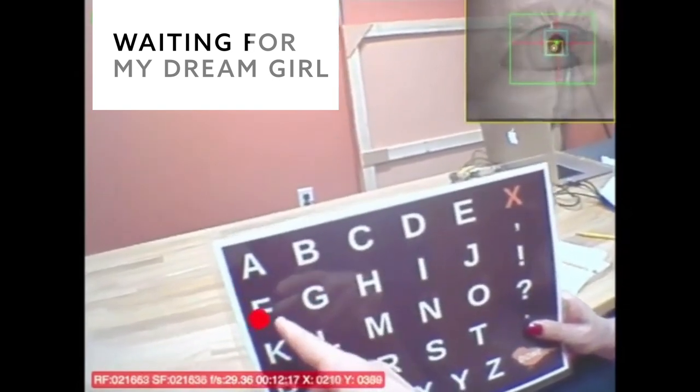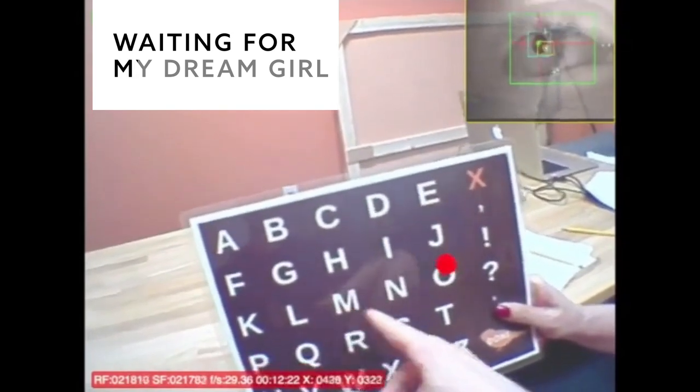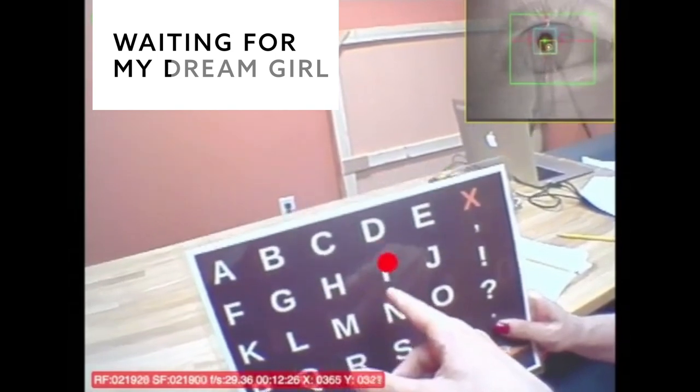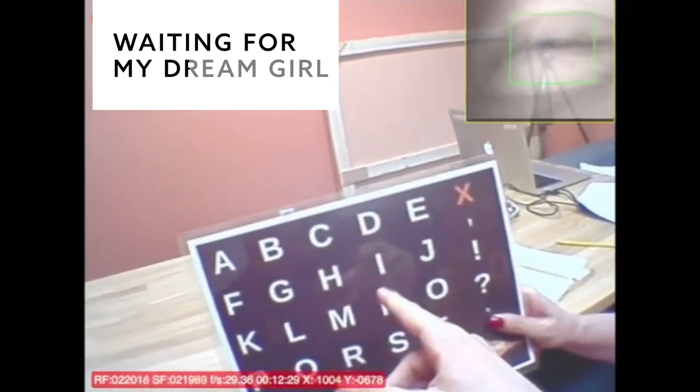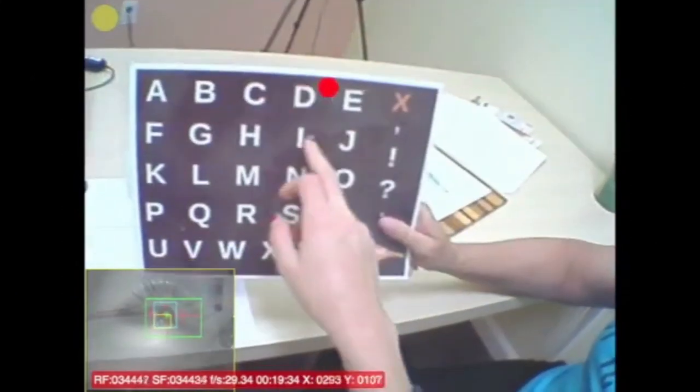Subtle cues are hard to detect and easily confused. So if the assistant had cued participants, the researchers would have expected participants to spell slowly, to misspell words frequently, and to look at several letters before finding the ones signaled by the assistant. The researchers observed the opposite.